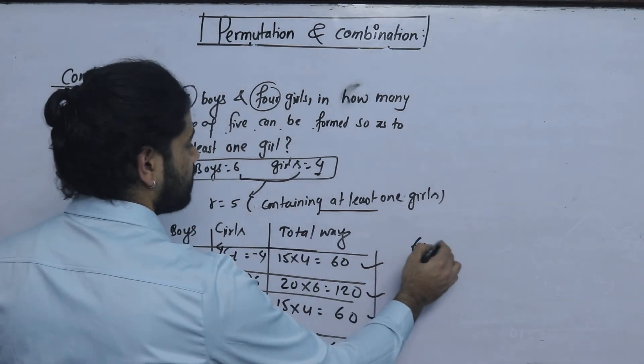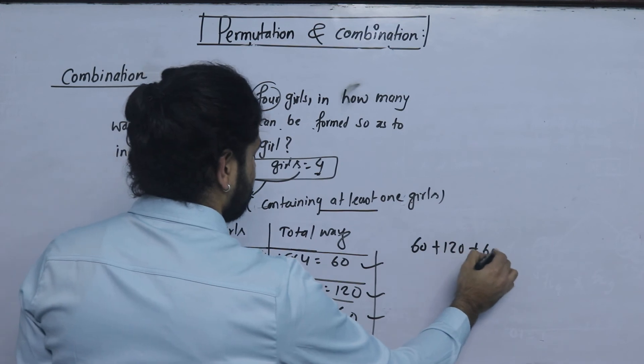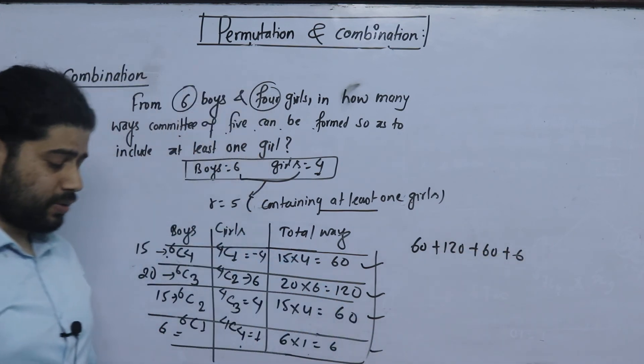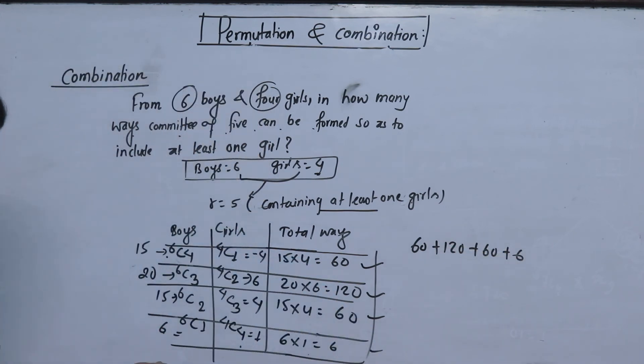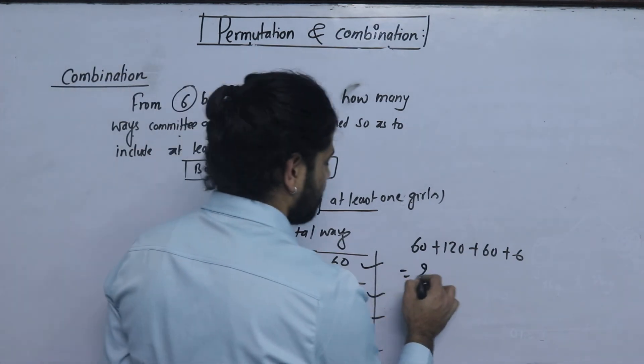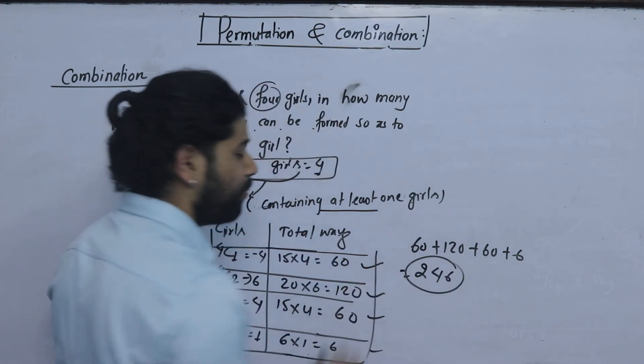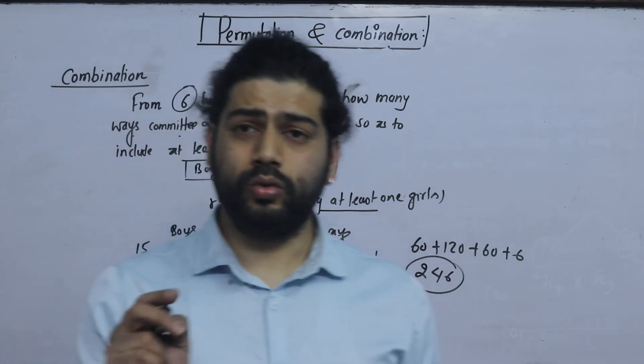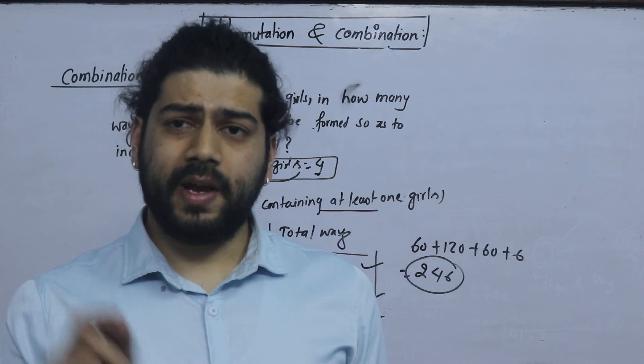The total option is 60 plus 120 plus 60 plus 60. 60 plus 120 plus 60 plus 6. 246 is a way to get at least 1. So the group is at least 1.